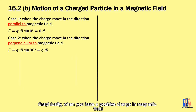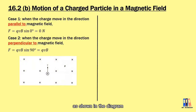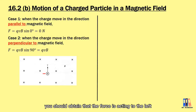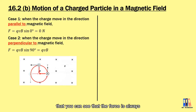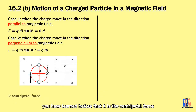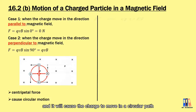Graphically, when you have a positive charge in the magnetic field as shown in the diagram, you can use the cross product of V and B or the Fleming left-hand rule to identify the direction of the force on the positive charge. The force acts to the left, and you can see that the force is always 90 degrees to V. This is the centripetal force, and it causes the charge to move in a circular path.